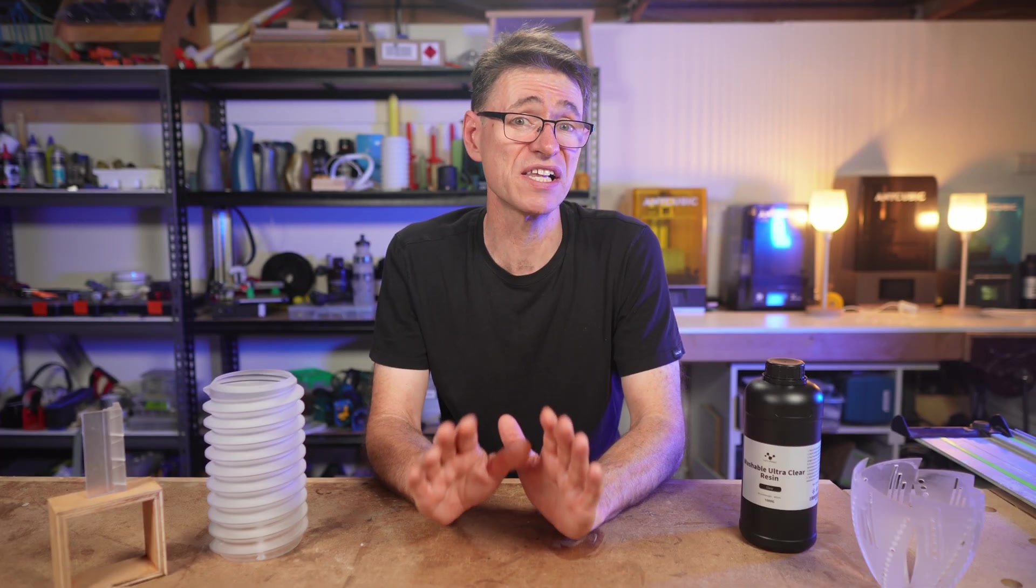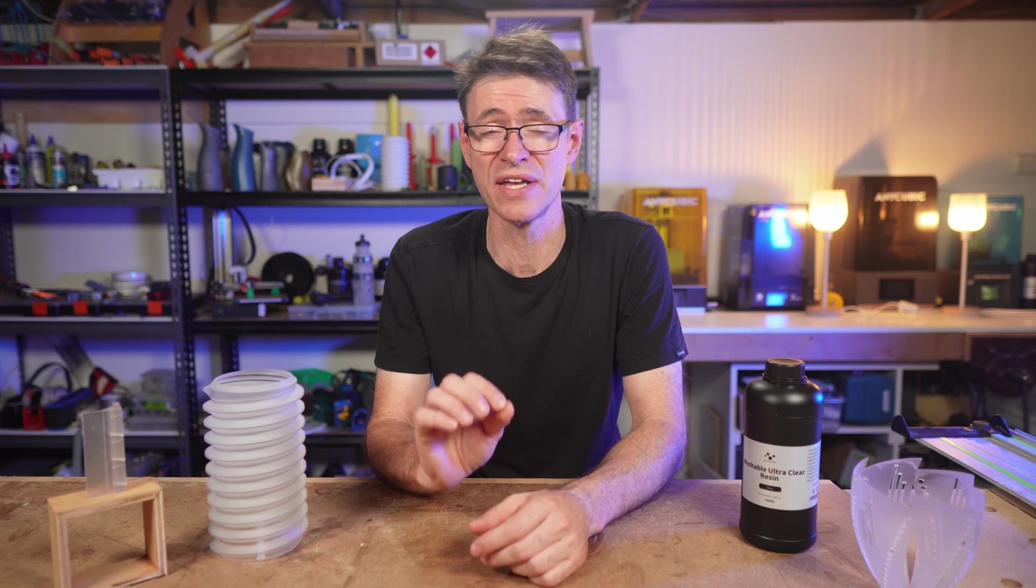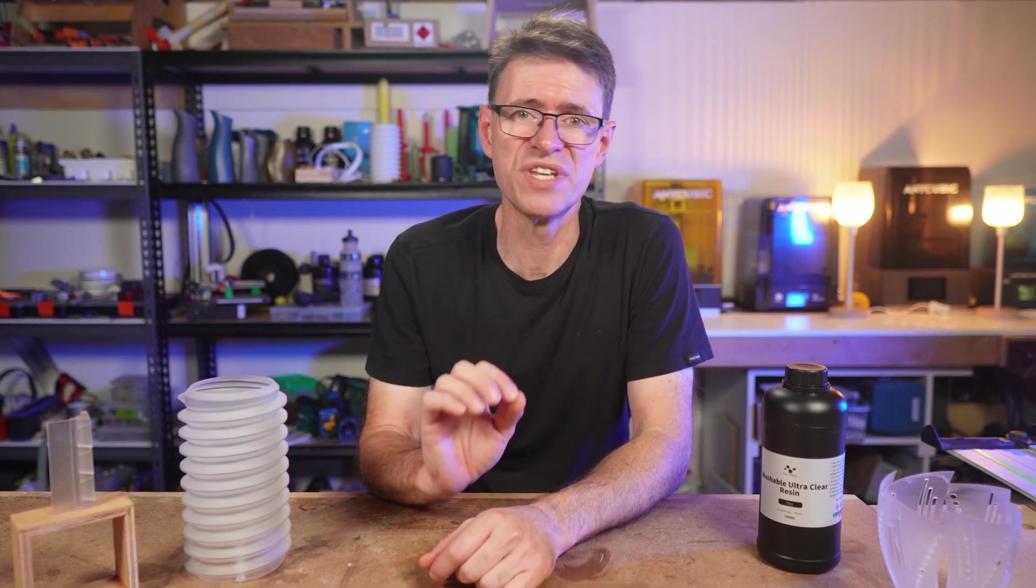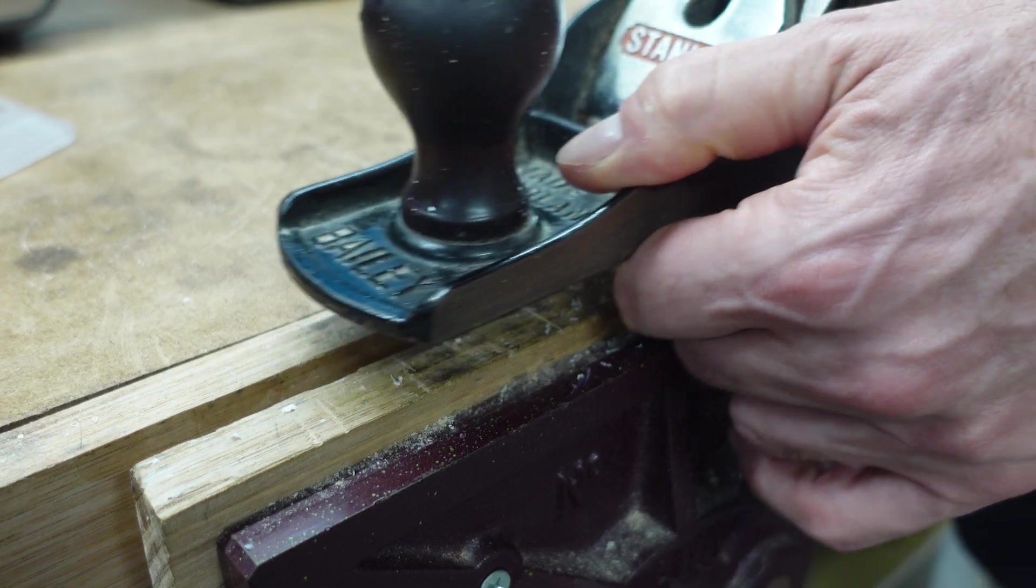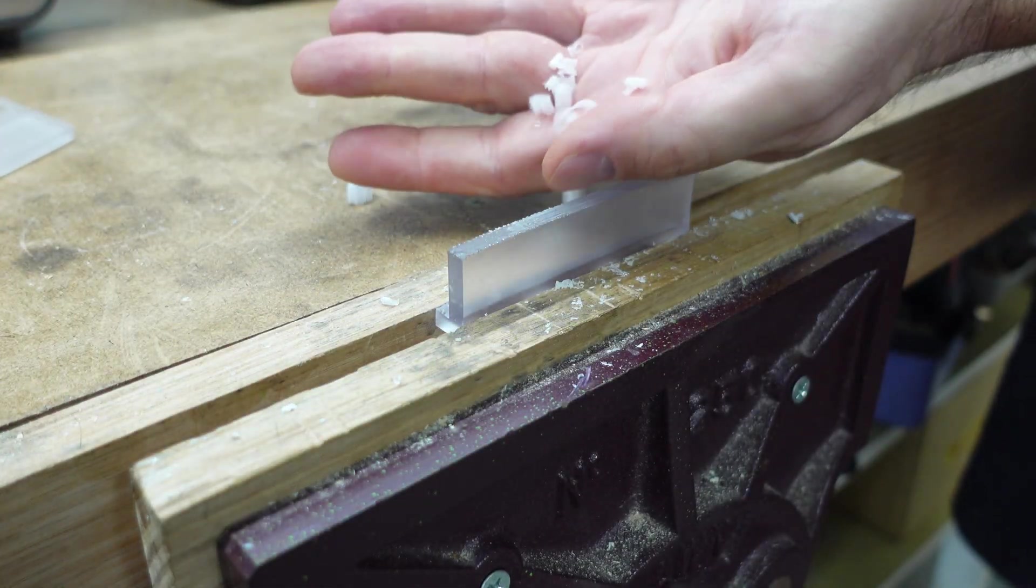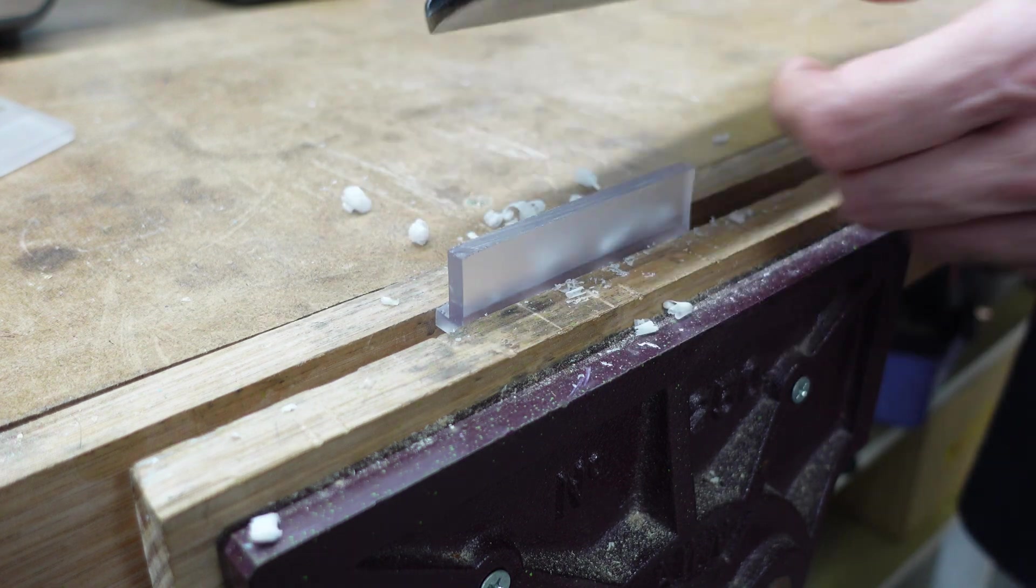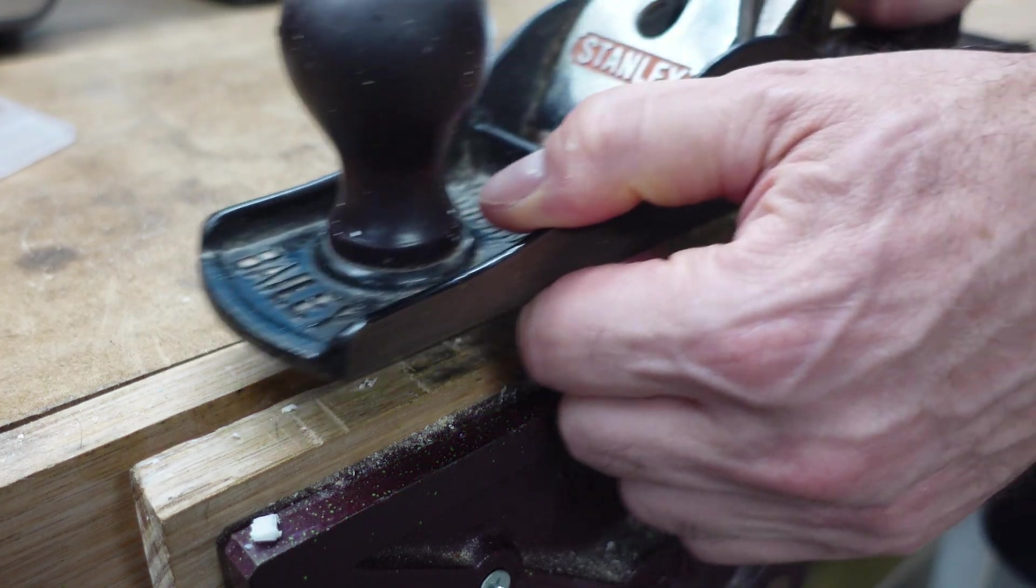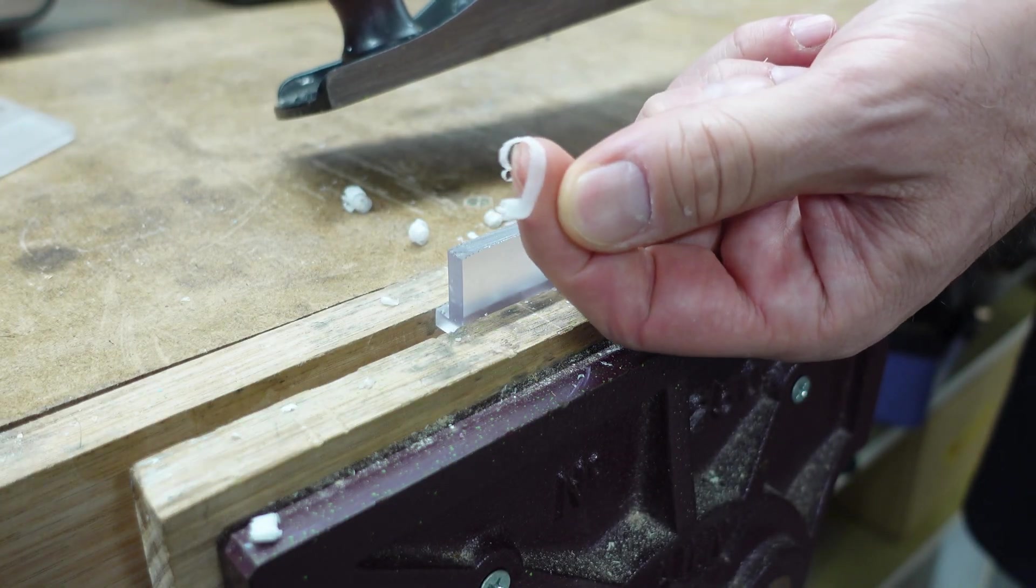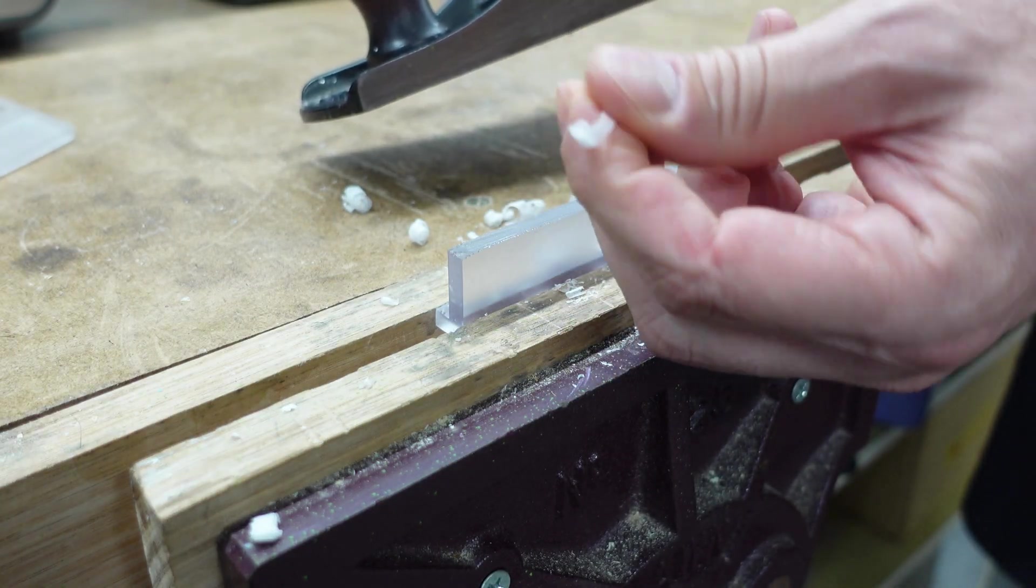It even takes a blade well. If you need to create a clean square surface or a clean square edge, the temptation is to sand, but you'll never get it quite square. A blade or cutting procedure is always better. And you can see here that the resin planes quite nicely. Of course, you need to make sure that you have nice sharp plane blades, but this shows that if you need to fine tune your prints to get a sharp square edge, this resin can do it.